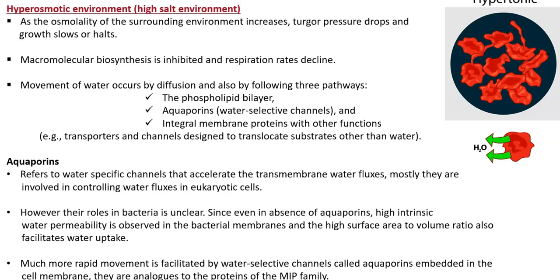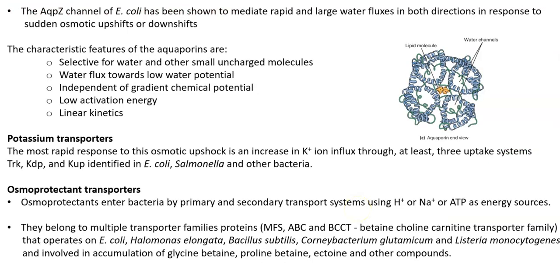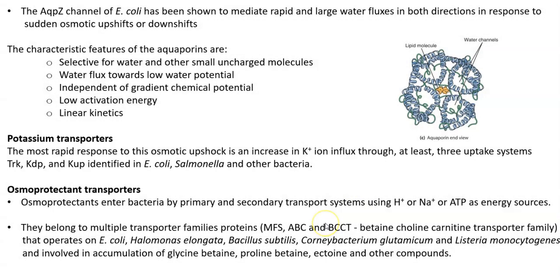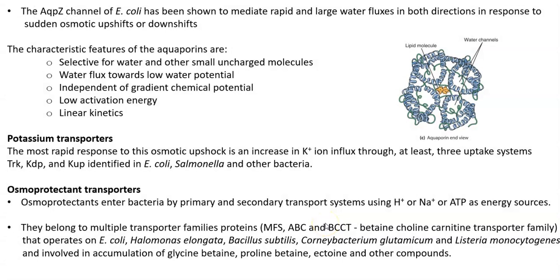Aquaporins are water-specific channels that accelerate transmembrane water fluxes. They are mostly involved in controlling water movement in eukaryotic cells, and their role in bacteria is unclear, since even in the absence of aquaporins, high intrinsic water permeability is observed in bacterial membranes — attributed to the high surface area-to-volume ratio of bacterial cells. The aquaporin protein is analogous to proteins of the MIP family (major intrinsic protein family). The aquaporin channel in E. coli is referred to as the AQPZ channel, shown to mediate rapid and large water fluxes in both directions in response to sudden osmotic upshifts and downshifts.